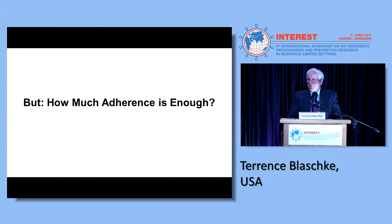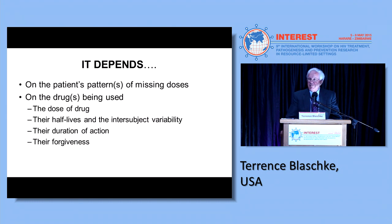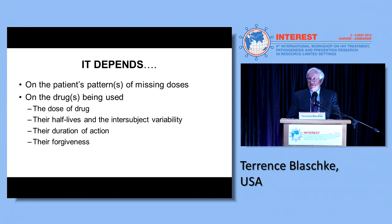I'm going to finish up by talking about how much adherence is enough, because nobody's perfect and we really have to understand what level of adherence is actually sufficient. Unfortunately, there's not a simple answer in HIV or in any chronic disease state. It certainly depends on the patient's patterns of missed doses, but also on the drugs being used — the dose, the half-lives of the various drugs in a multidrug combination, their duration of action, and the forgiveness of the individual drugs. What we need is to better understand which patterns of adherence are going to be forgiving and which may not be in terms of the risk of developing drug resistance.